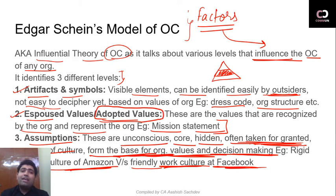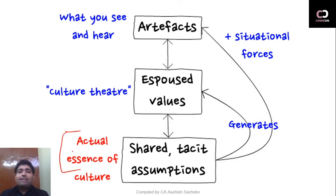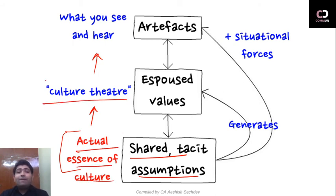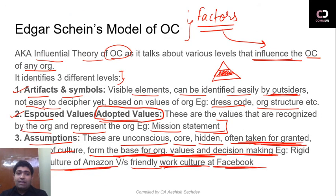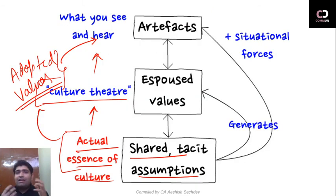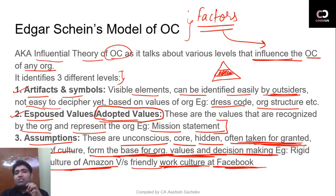So this is what is explained under the Edgar Schein model of organizational culture — it is an influential model because it divides the factors that influence organizational culture into three levels: first, Artifacts and Symbols; second, Adopted Values; and third, Assumptions. The shared values and core assumptions form the base for the others. On the basis of these assumptions — the actual essence of culture — some adopted values are formed. And on the basis of those, our artifacts and symbols are formed.